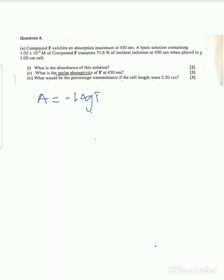The first question asks: what is the absorbance of this solution? There are two ways to calculate this. The first formula is absorbance equals negative log of transmittance, which can also be written as absorbance equals log of 1 over transmittance. The second formula is absorbance equals molar absorptivity at a specific wavelength times concentration times the length of the cell.